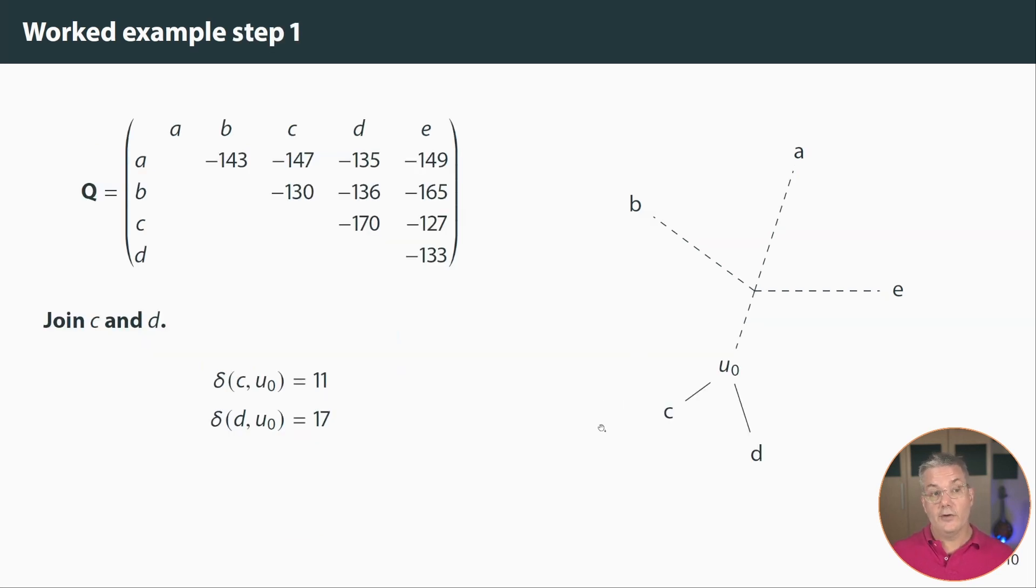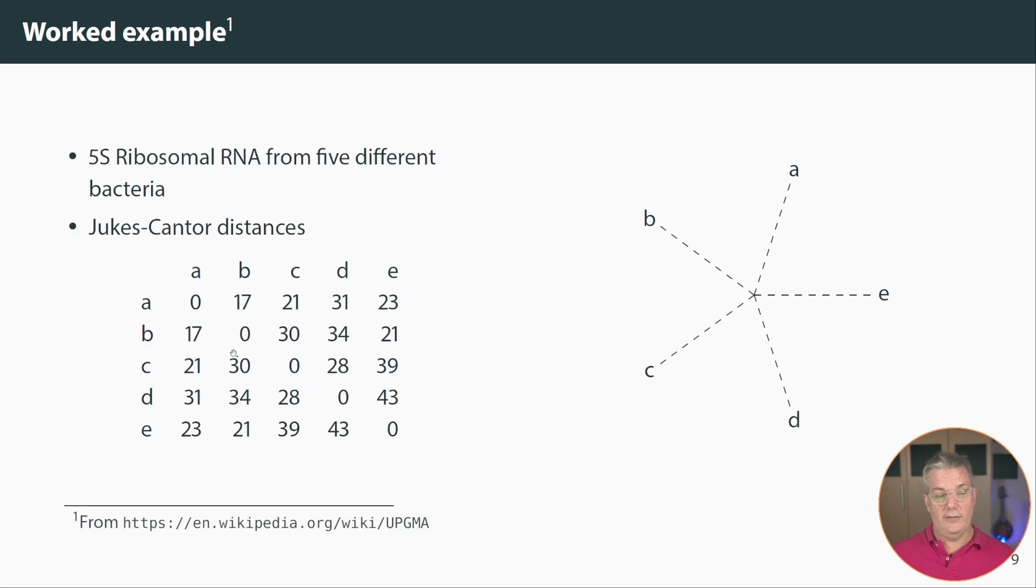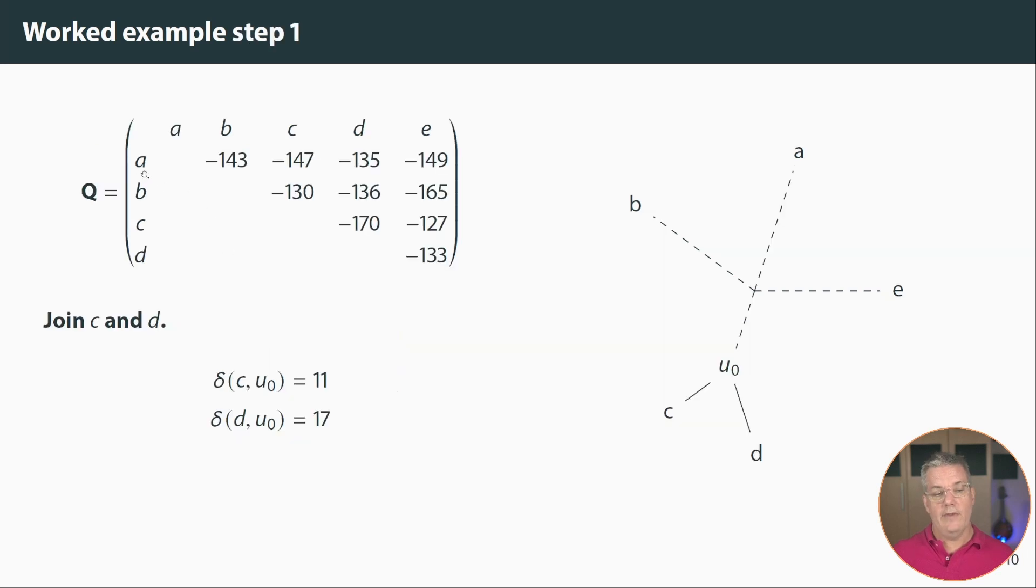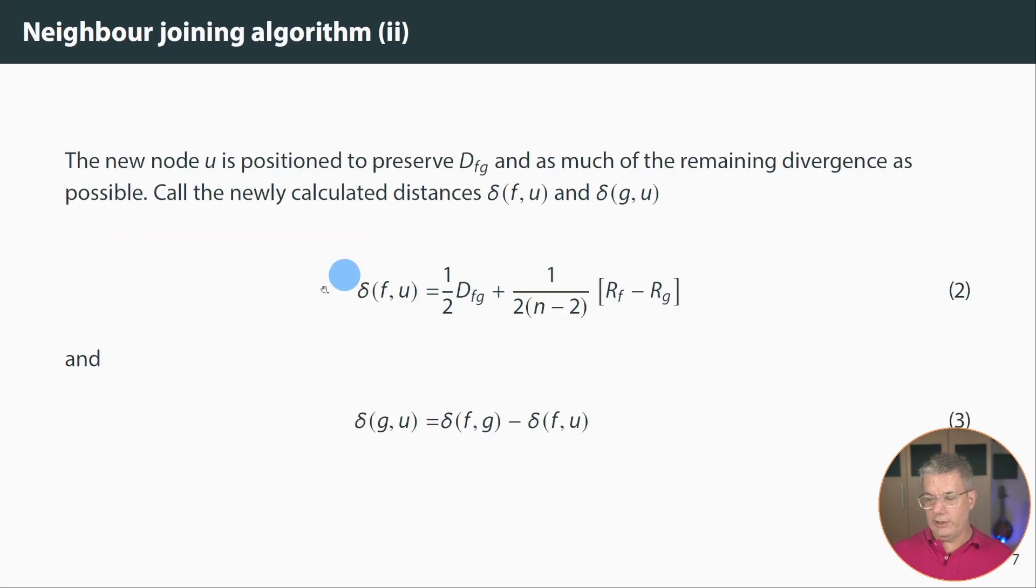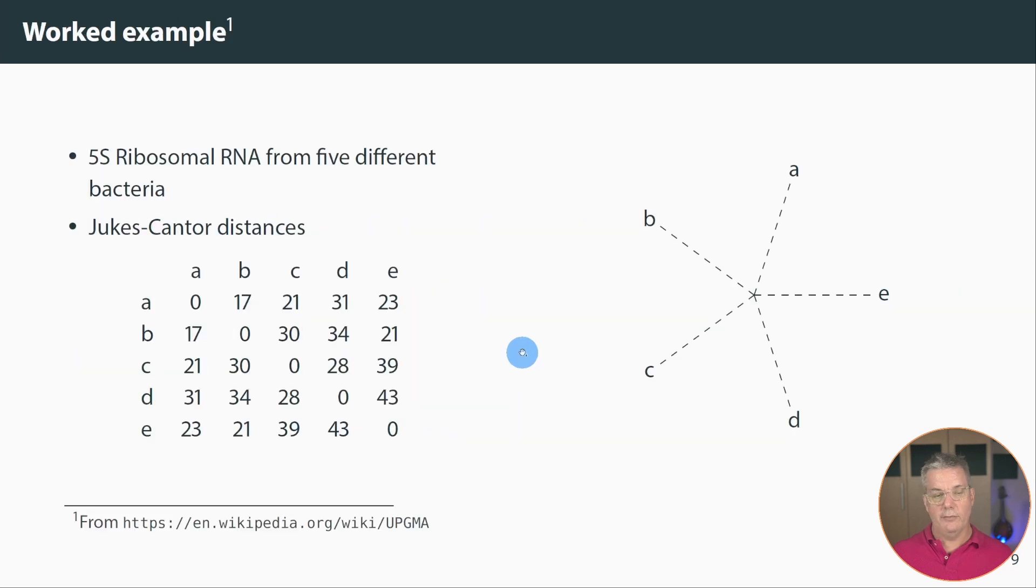The first thing we need to calculate is this divergence matrix Q. So we just take the, we sum the rows to get the R sub i and R sub j and then we do the subtraction on equation one to calculate Q. Now I've removed the diagonals from this because they're even more negative and remember we only want the non-identical ones. And I'm just looking at the upper diagonal. It's a symmetric matrix so we can just look at that. And we can see that the smallest value is negative 170 and that's C and D.